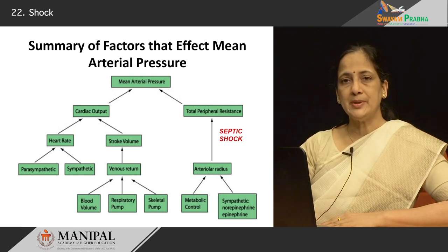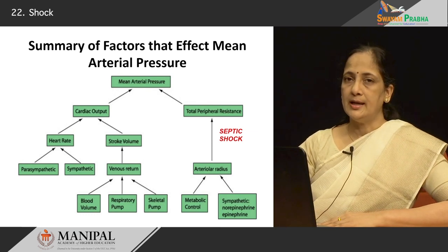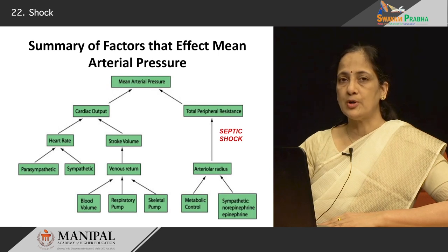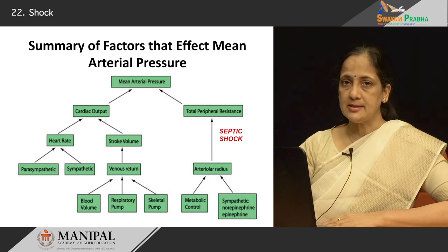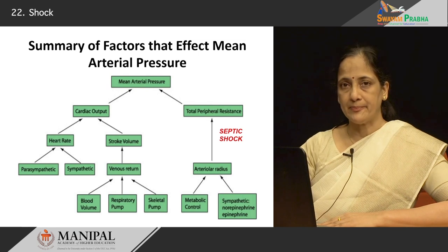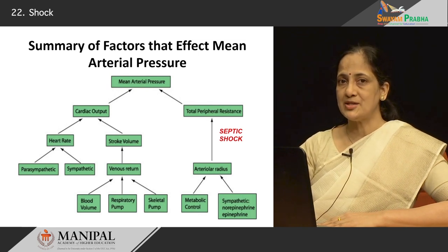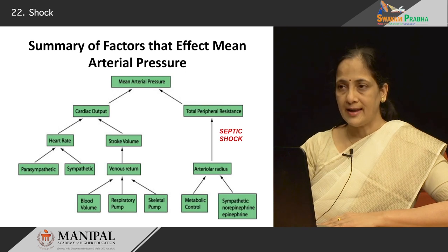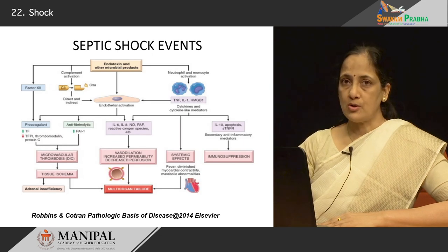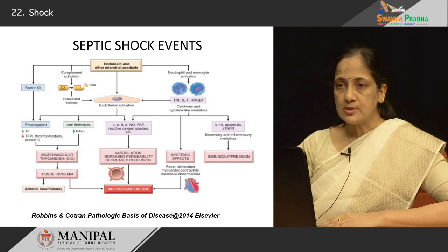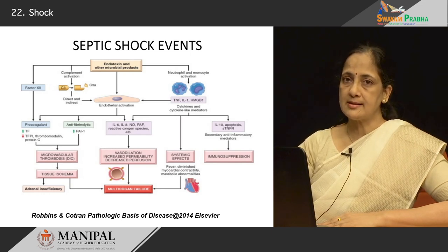Comparing the earlier two types with septic shock: in cardiogenic and hypovolemic shock, compensatory mechanisms cause peripheral vasoconstriction to redistribute blood to vital organs, so the patient's skin is cold and clammy. However, in septic shock, there is vasodilatation — so when you touch these patients, you find that the skin is warm and dry because of that peripheral vasodilatation. In septic shock, a number of different mechanisms come into play and a number of different pathological processes occur besides the vascular changes described.